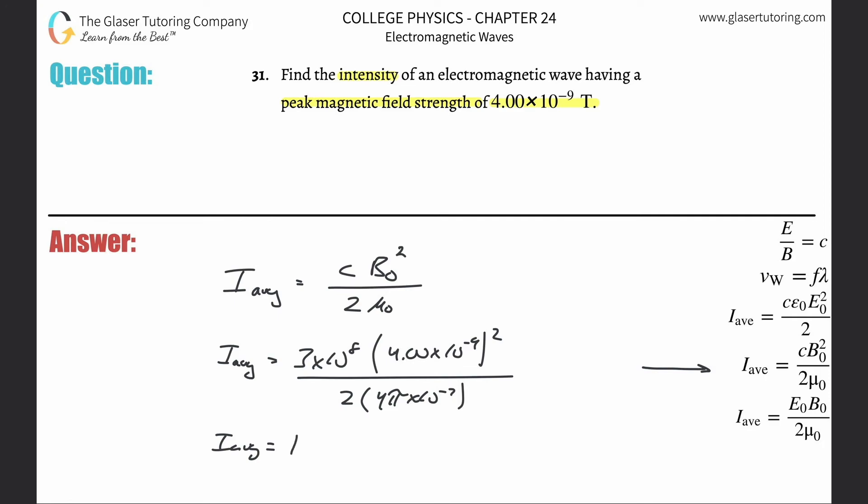So we get a value here of about 1.91 times 10 to the minus third, and that is in watts per meter squared. Those are the units of intensity. And that's it guys, thanks so much for tuning in, appreciate it.